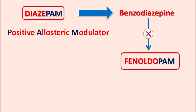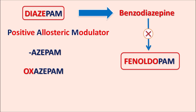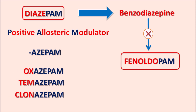Fenoldopam is used to treat severe hypertension, where it increases renal vasodilation to reduce the sodium load in the body. So how can we identify the real benzodiazepines? The correct suffix for benzodiazepines is '-azepam'. We have many drugs with this suffix, such as oxazepam, temazepam, and clonazepam — all of these are benzodiazepines acting as anxiolytics.